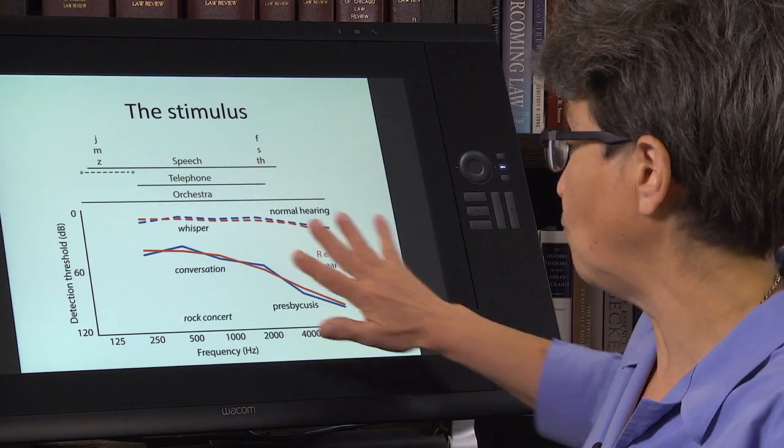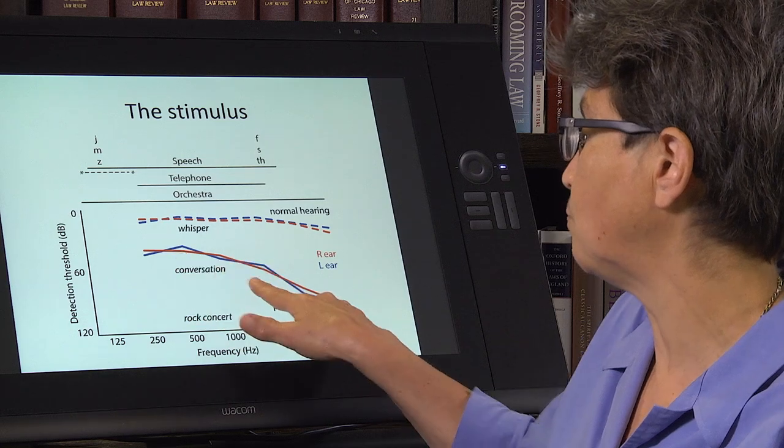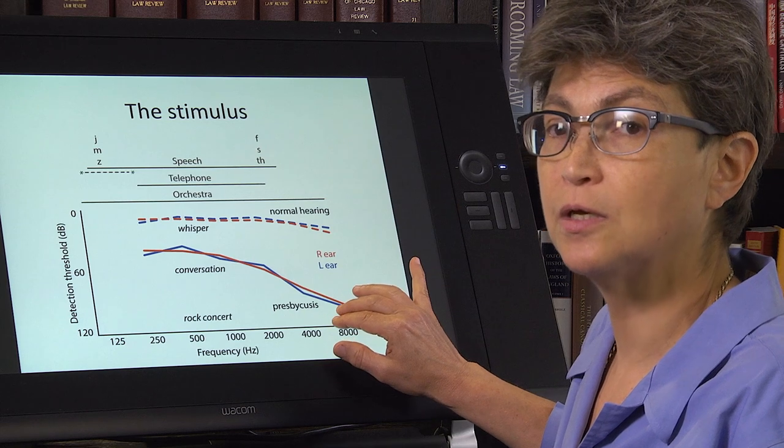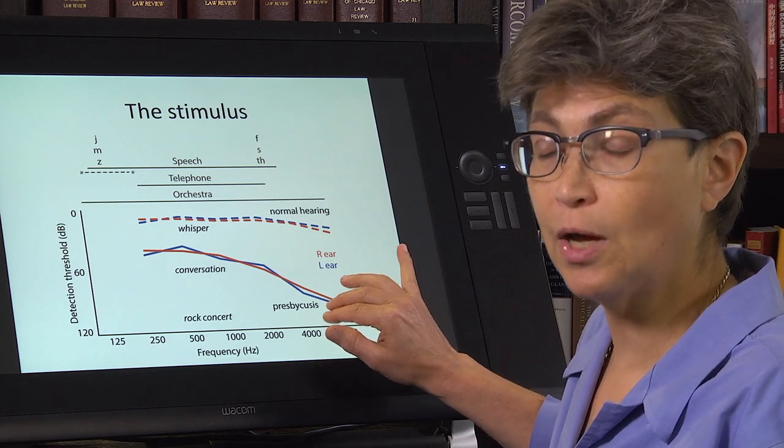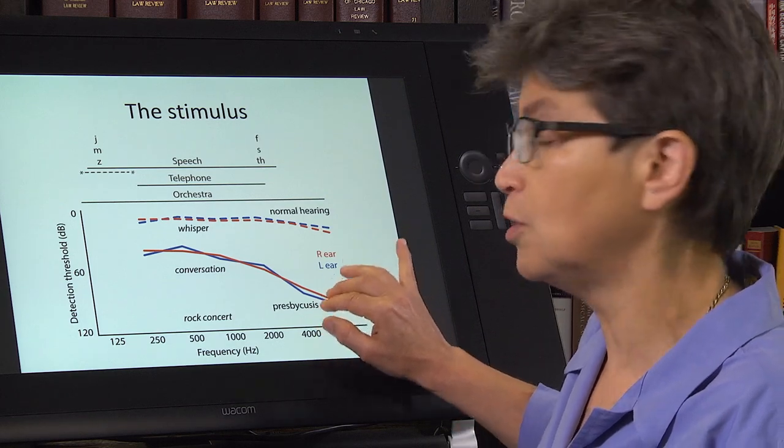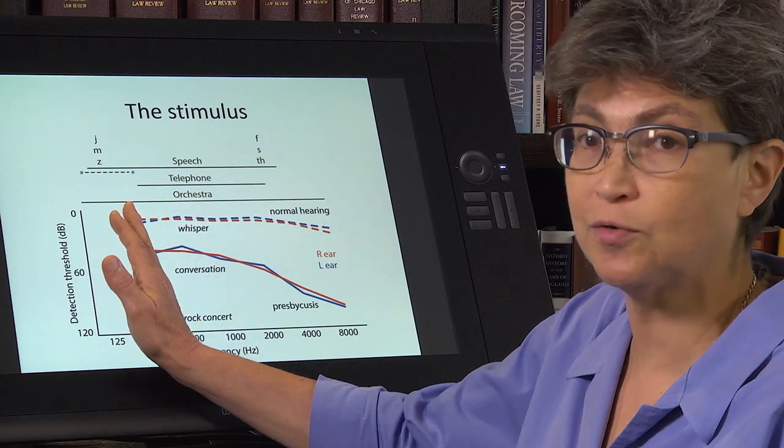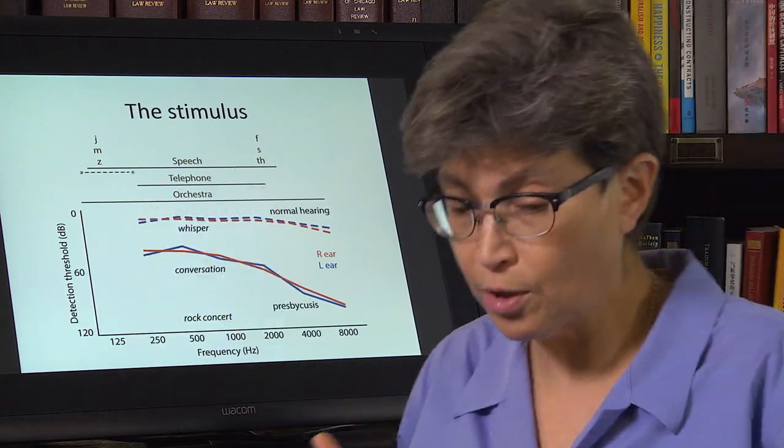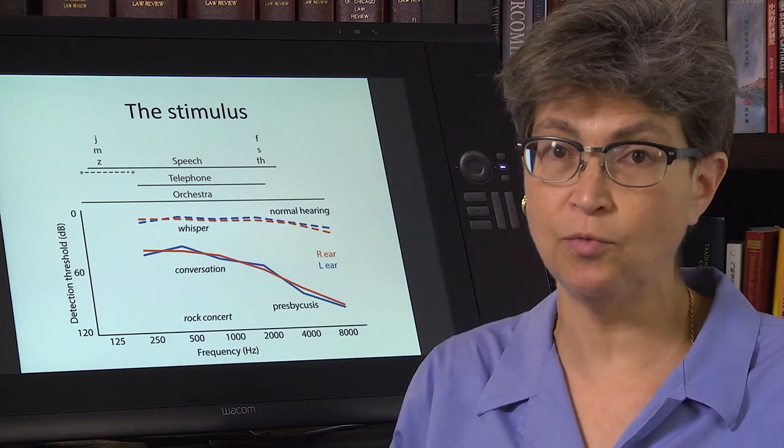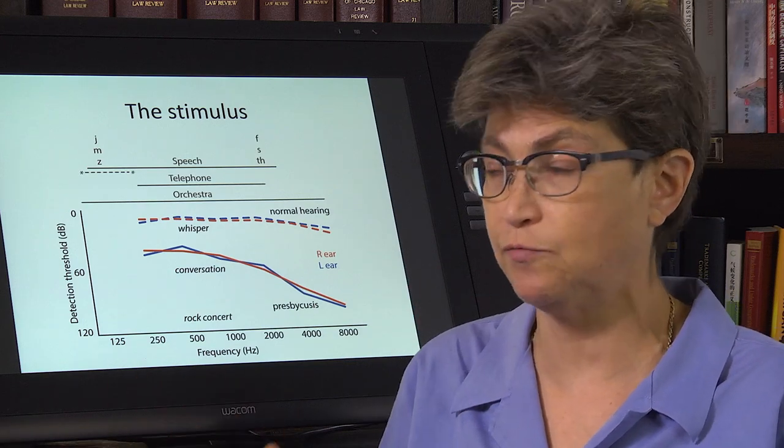And what you can see from this, this is a typical what would typically occur with presbyacusis is that it's much more severe for the higher frequencies. So as we age, and if we lose hearing as we age, we're going to lose primarily the hearing at the high frequencies. And these lower frequencies are going to be relatively intact. This is one of the reasons why men are easier to understand than women. Their speech is shifted to lower frequencies than the speech of women.